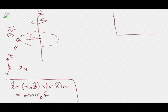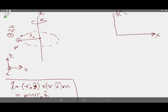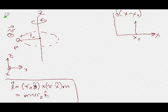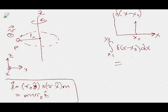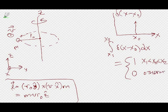How is a Dirac delta function defined? In one dimension, if I plot delta of (x − x_0), it looks like an infinite spike at x = x_0. The real definition is: the integral from x_1 to x_2 of delta(x − x_0) dx equals 1 if x_0 is within your range (x_1 < x_0 < x_2), and 0 otherwise. A Dirac delta function has infinite height and zero width, with the infinity chosen such that infinity times zero equals one in this case.